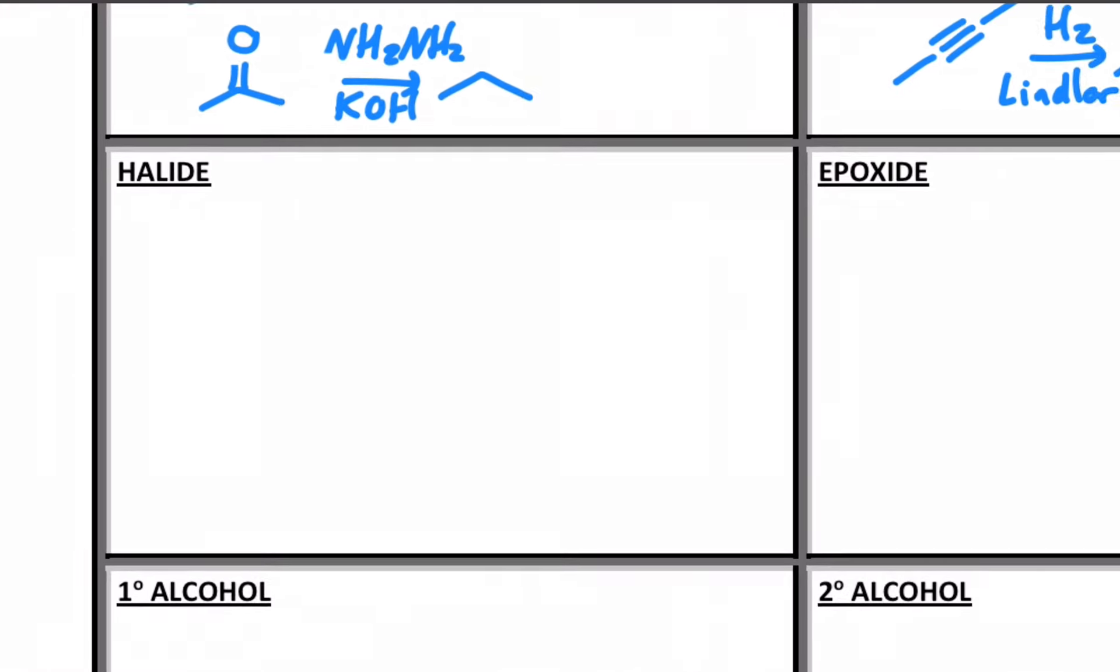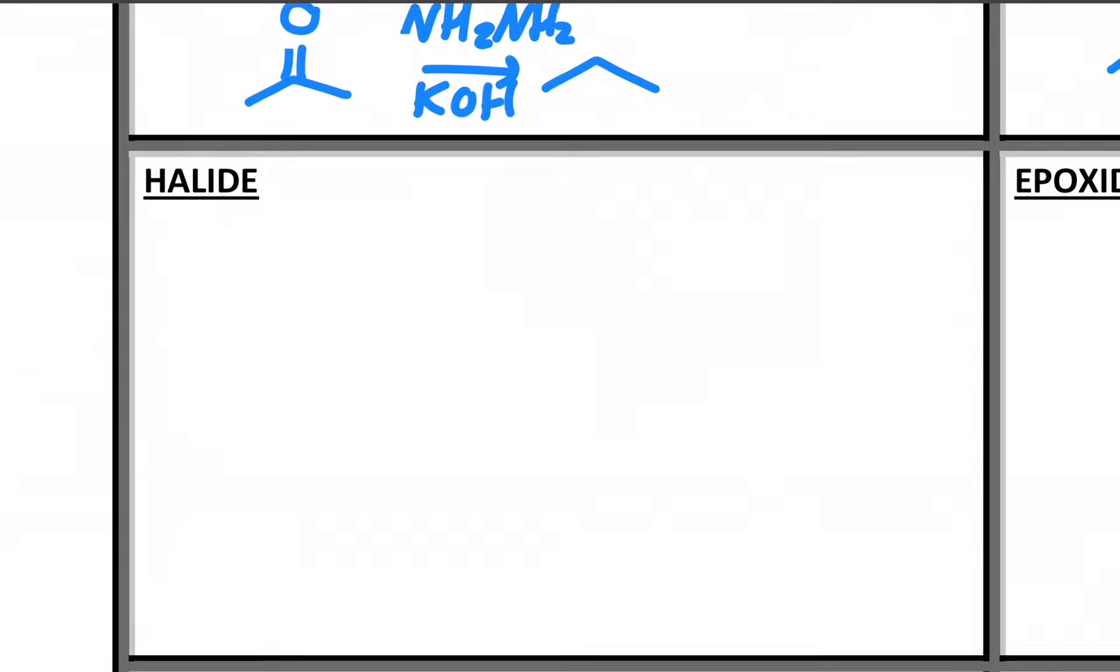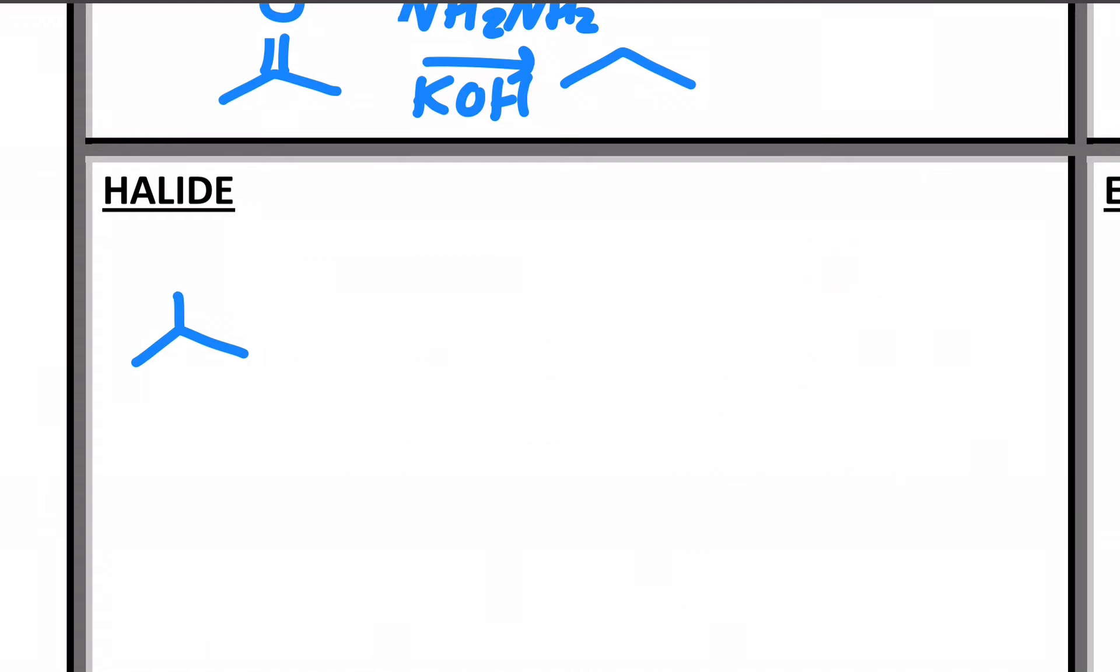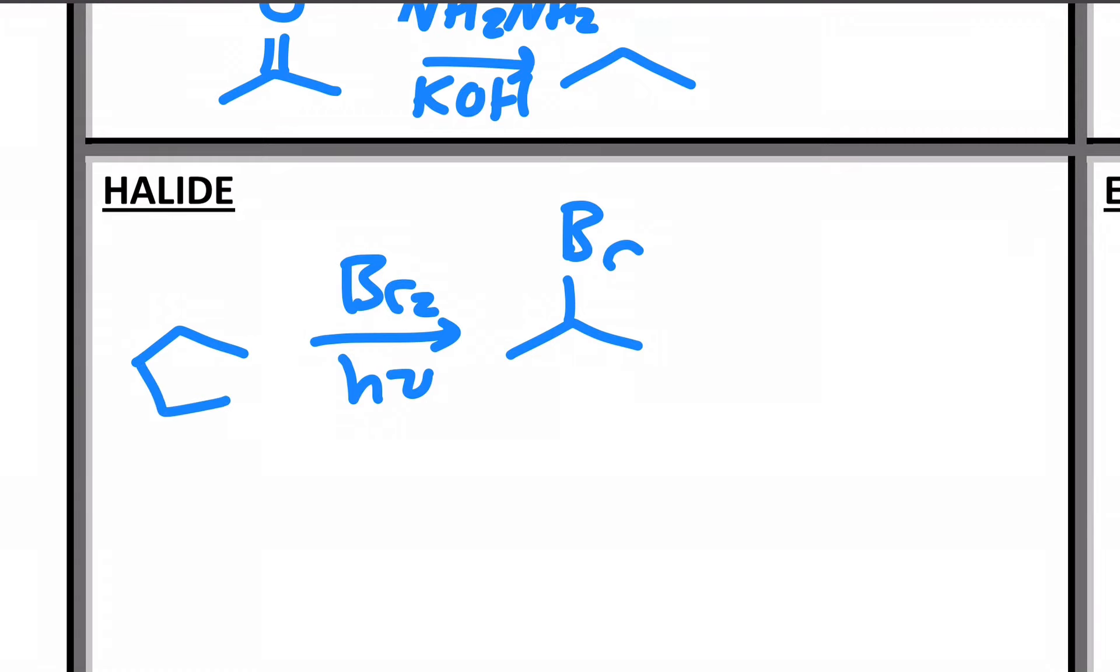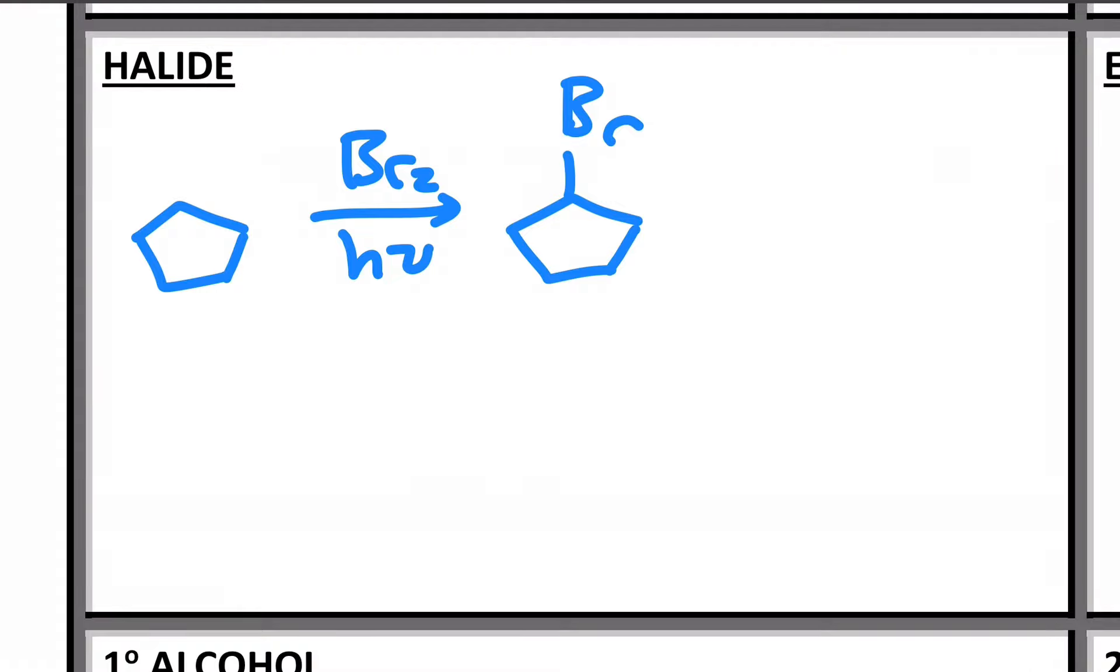Moving on to the halides, we can actually write out the first reaction we ever learned: radical halogenation. Starting with an alkane, I can brominate the more substituted position. That's with elemental bromine and photochemistry, special form of light. You are almost guaranteed that if you start with an alkane, your first step in a synthesis is going to be radical halogenation. This works really well for nice symmetric alkanes like cyclopentane. Then there's no competition about where the halogen goes.